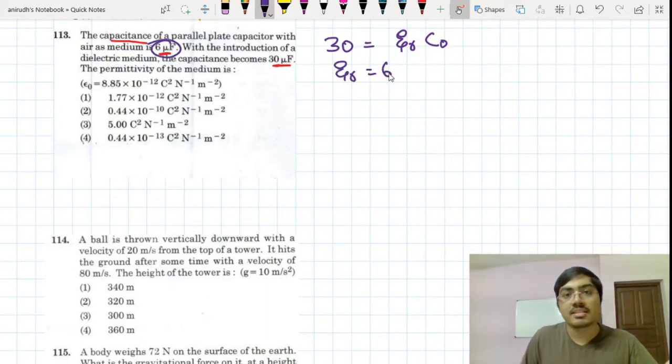So this epsilon r is equal to 30 by 6, so that will be 5.